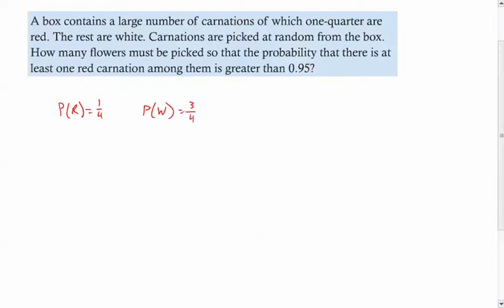Now, it's important that it says a large number because a large number means that pulling one out is not going to make a difference in the probability. It will to like the hundredths or thousandths place, but it really won't matter if I pull one carnation out. It'll still be approximately one out of four for red and three out of four for white.